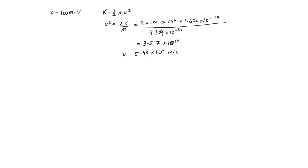Now, clearly, this can't be the velocity of the electron because this velocity is greater than the speed of light. This tells us that this is a relativistic electron. For relativistic particles, we need to use the relativistic kinetic energy equation: K equals mc squared over the square root of 1 minus v squared over c squared, minus mc squared.